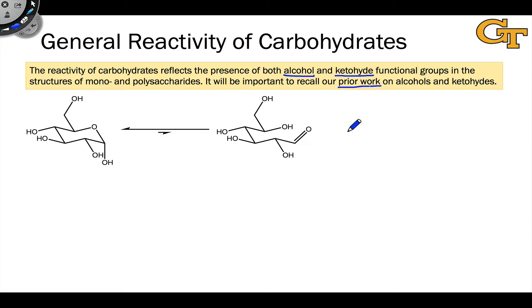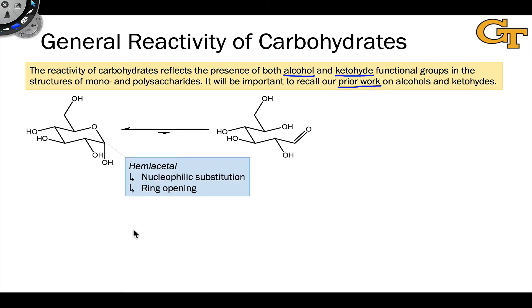Let's summarize the general reactivity of carbohydrates by enumerating what we already know about the alcohol, aldehyde, and hemiacetal functional groups. Let's start with the cyclic form, which is the more predominant form at equilibrium of the carbohydrate.